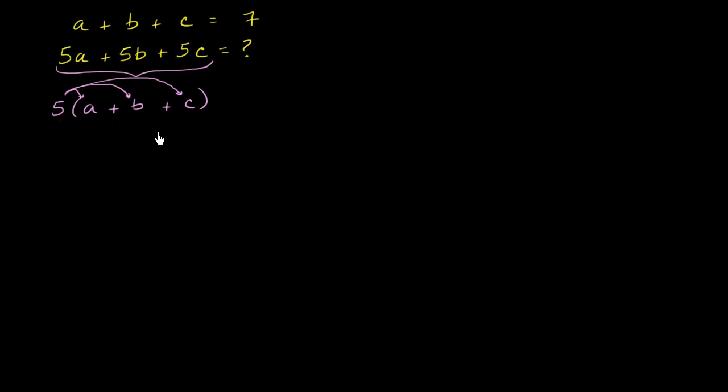Now, how do we evaluate this? Well, that first equation gave us all the information that we needed. They told us that a plus b plus c is equal to 7. So 5 times (a plus b plus c) is the same exact thing, and I think you see where this is going now, is 5 times 7. And now this becomes pretty straightforward. That's going to be equal to 35.